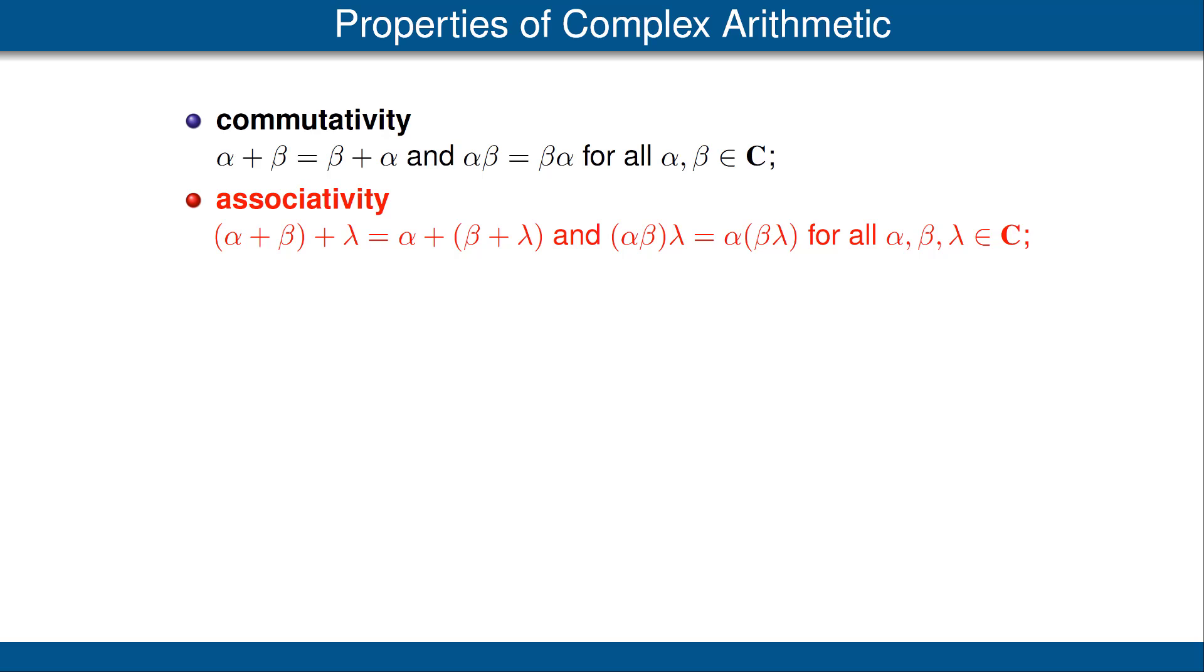Thus, in expressions such as alpha plus beta plus gamma, or alpha times beta times gamma, we do not need to bother with parentheses. 0 is the additive identity for addition of complex numbers, and 1 is the additive identity for multiplication of complex numbers.